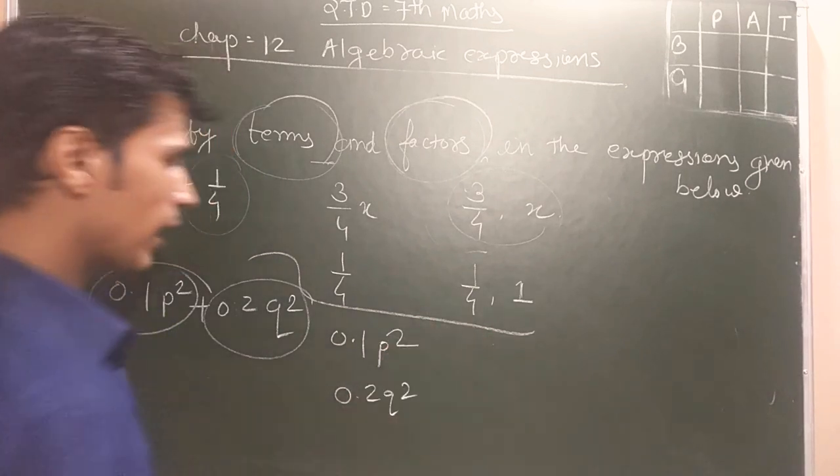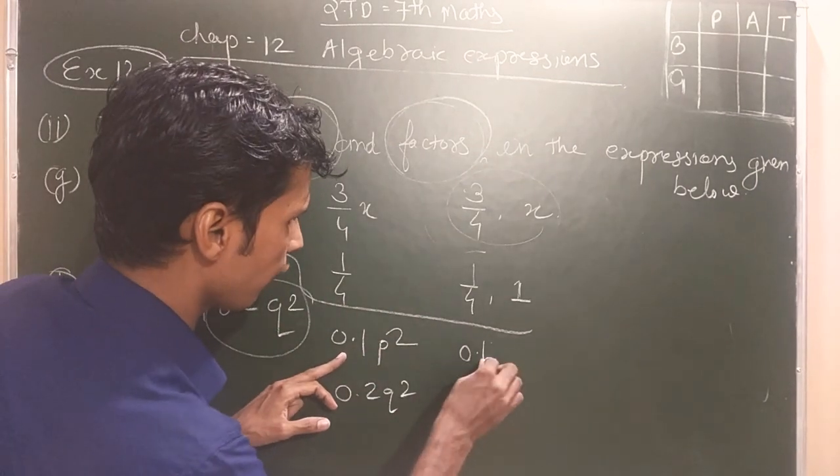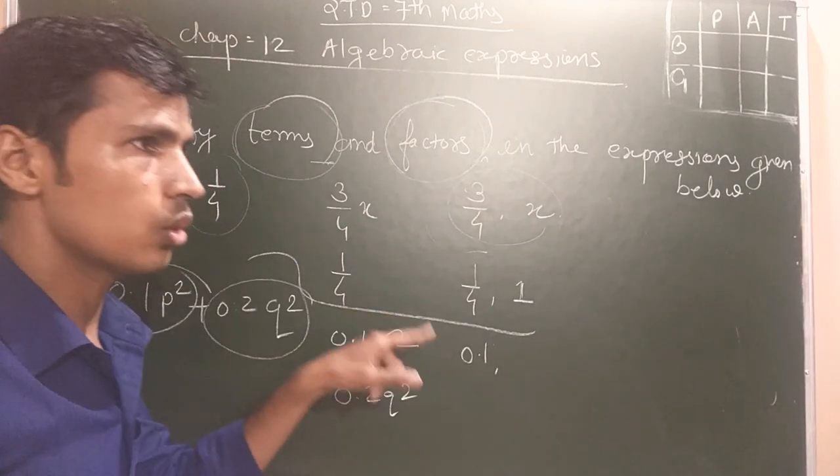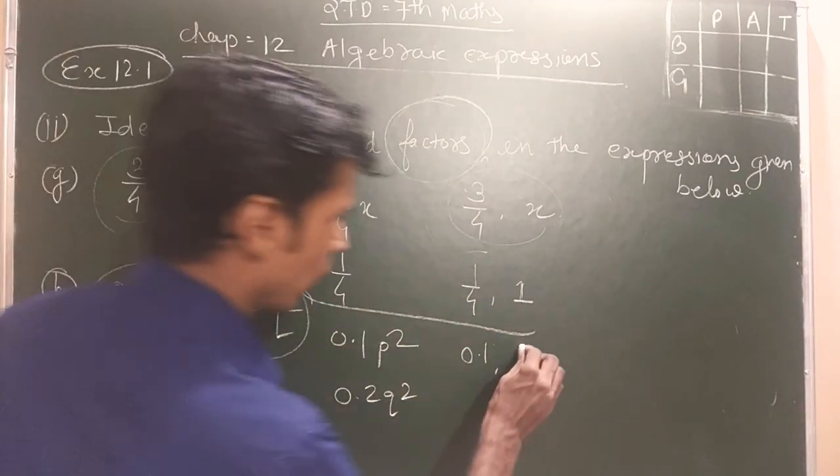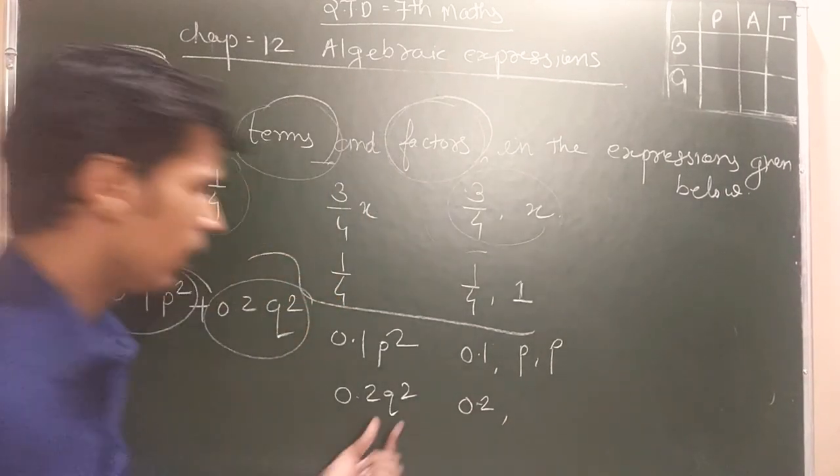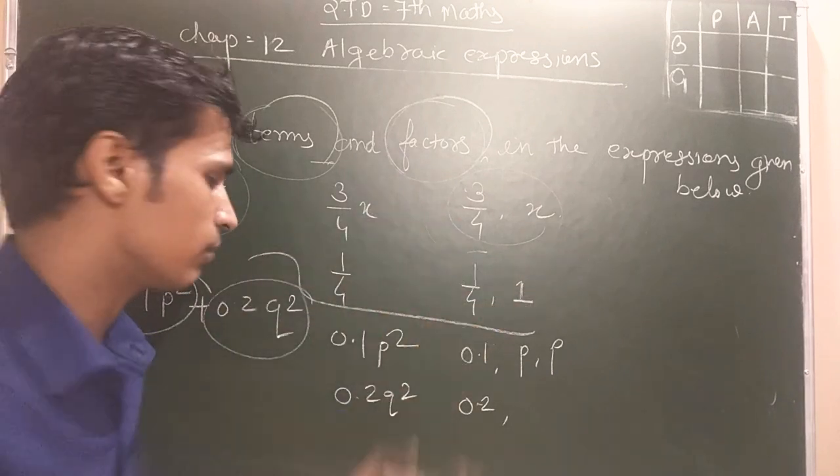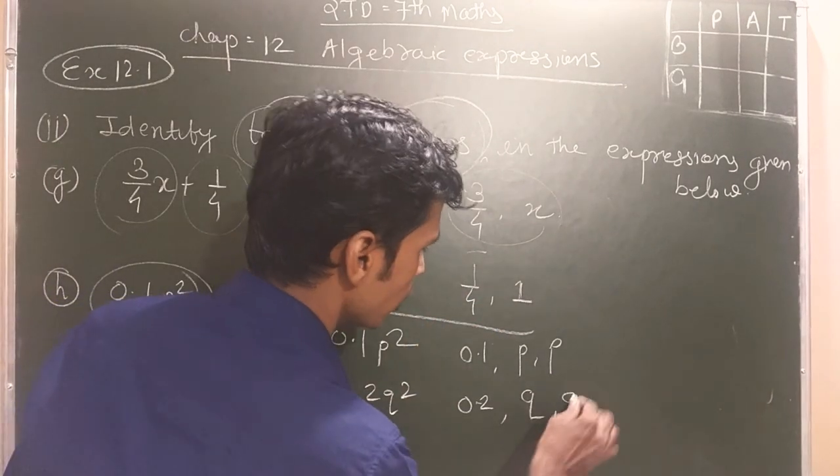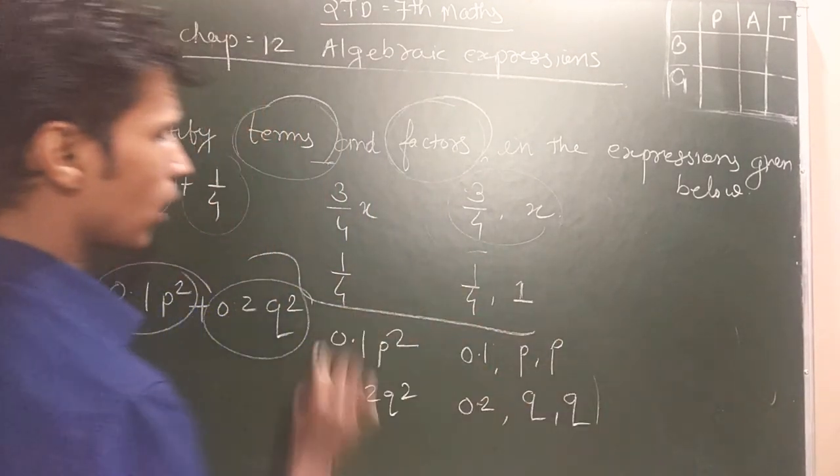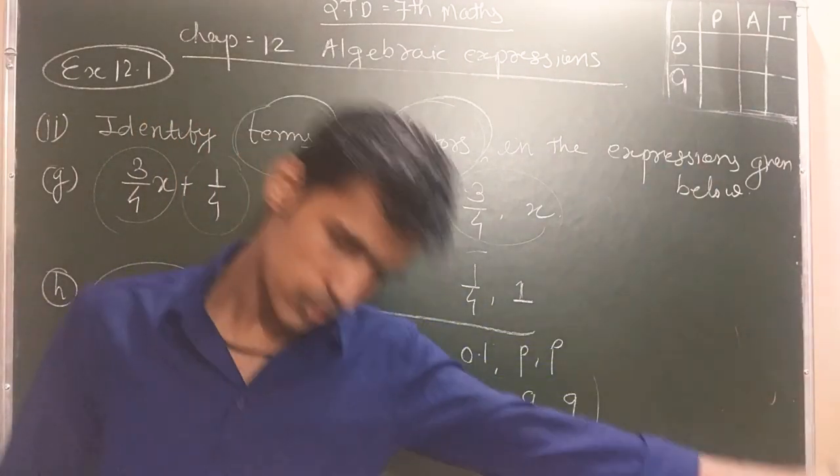Now I will write: 0.1, P and P. 0.2, then Q square. It is indicating Q is 2 times, so I will write Q 2 times. These are the factors of this term. Okay students, let us see next term.